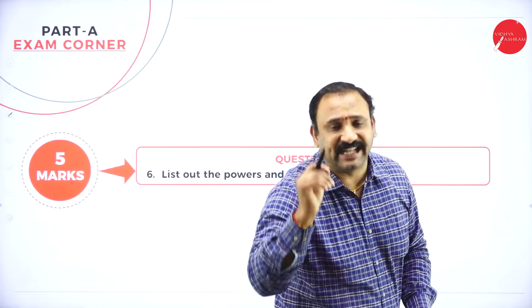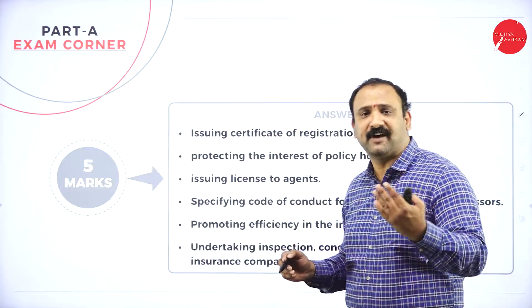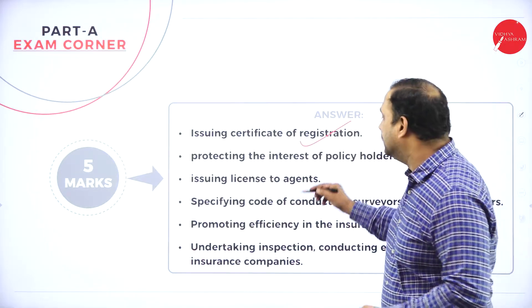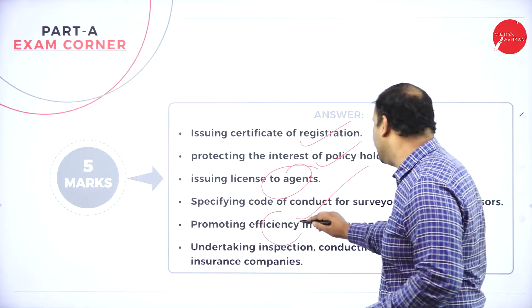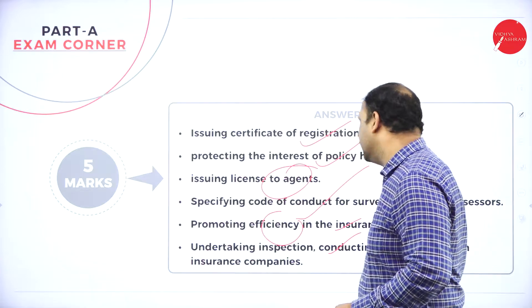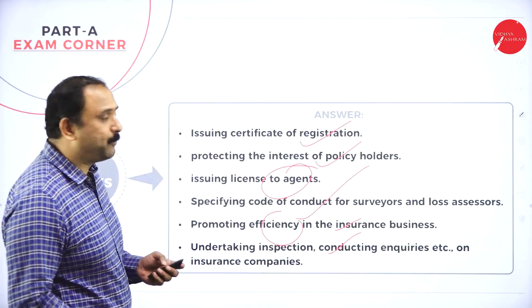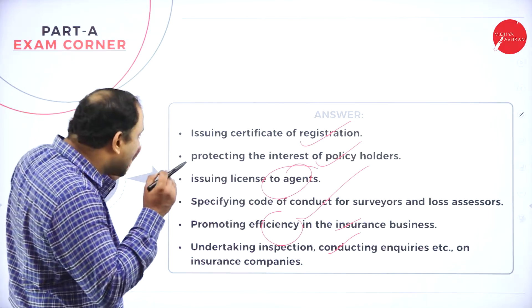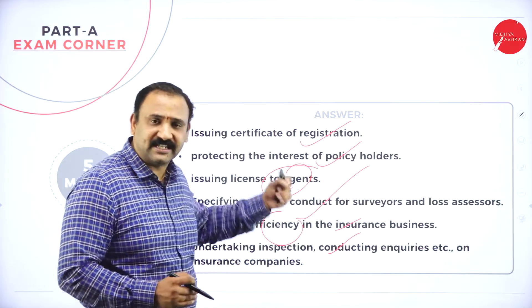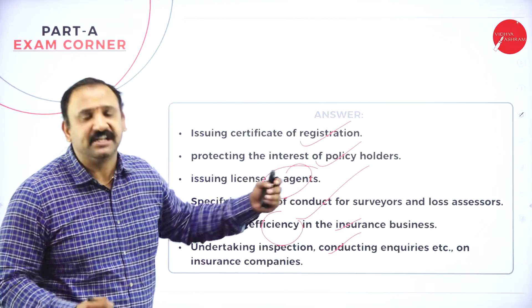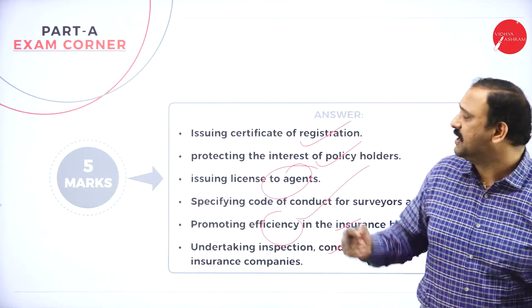The next question is: list out the powers and duties of IRDAI — the Insurance Regulatory and Development Authority of India. This is the supreme body in insurance. They issue certificates of registration, protect the interest of policy holders, issue licenses to agents, specify the code of conduct, promote efficiency in insurance business, undertake inspection, and conduct inquiries. The IRDAI has complete authority over insurance companies in terms of licensing, understanding queries, complaints, and any new rules and regulations.